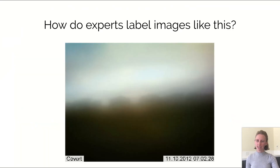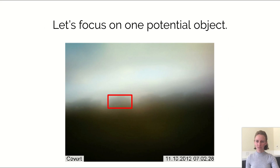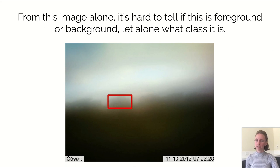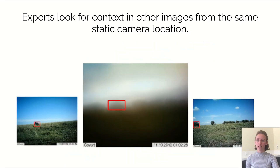How do experts label images like this? Let's focus on one potential object. From this image alone, it's hard to tell if this is foreground or background, let alone what class it is.